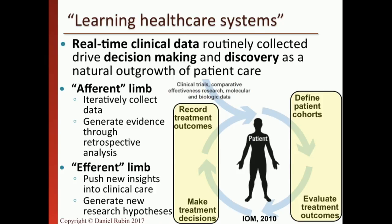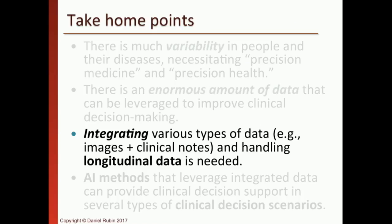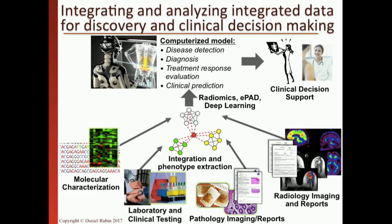These cycles are defined in terms of afferent limbs — iteratively collecting and querying data from historical records — and an efferent limb where you treat the patient and generate new data that goes back into the database for future queries. At Stanford this is actually being implemented through predictive models deployed in a decision-making informatics clinic. Other institutions are trying to implement this paradigm with clinical record data, though not yet with images — and integrating images is where we need to go next.